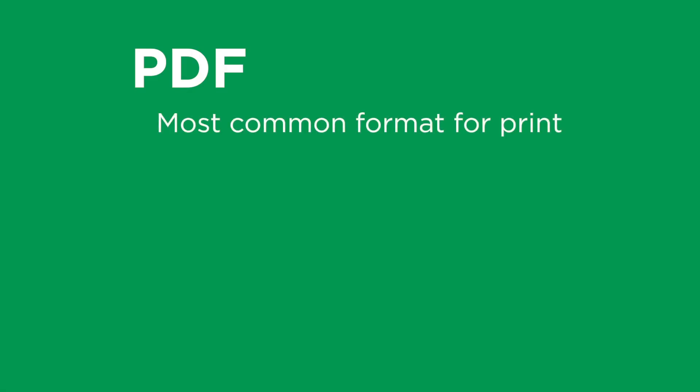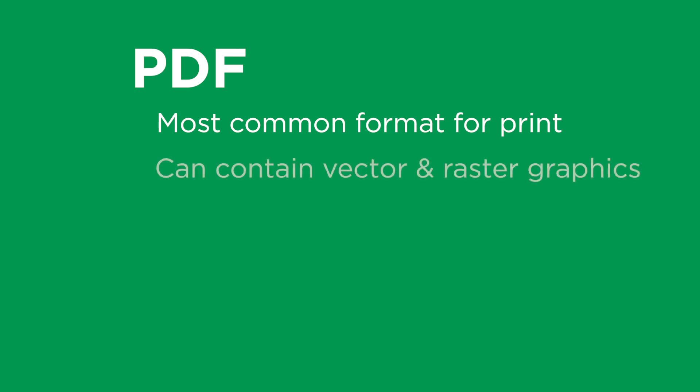Third, we have PDF files. This is the most common file type that a printer is going to want. When I was a digital pre-press artist, we only worked from PDF files — if a client gave us a JPEG, we would turn it into a PDF because it was most easily managed for our digital press. PDF can hold both vector and raster graphics, so you can have JPEGs in your PDF, but it can also hold vector files like logos.